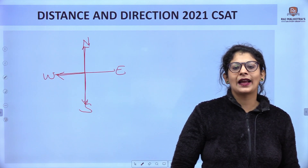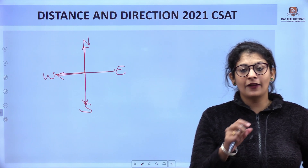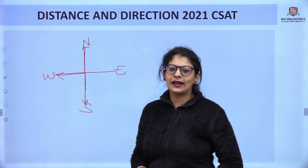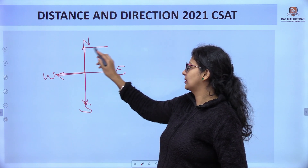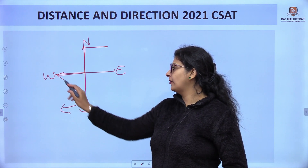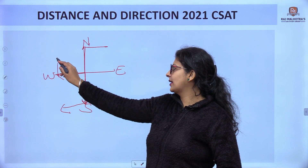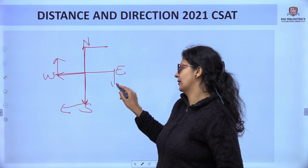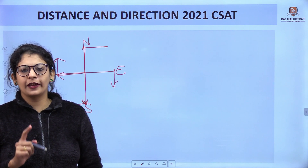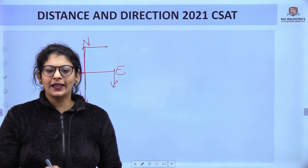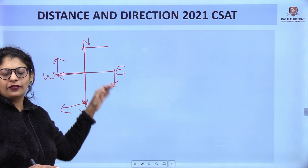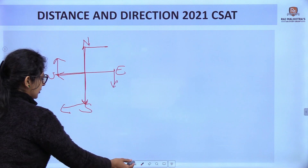We have to learn right turns and left turns carefully. If he is facing north and takes a right turn, the right turn is towards the east. If he is facing south, his right turn is towards west. If he is in west, his right turn is upward towards north. If he is in east, his right turn is downward towards south. Right turns and left turns should be taken carefully based on the person's facing direction.